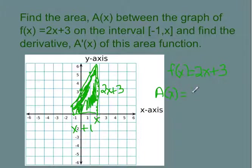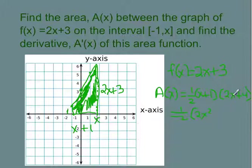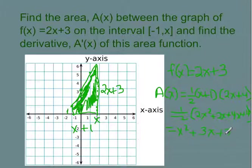So I have one half times the height, which is x plus 1, times the sum of the two bases. The left base at x equals negative 1 is 1, and the right base is 2x plus 3, so the sum is 2x plus 4. Distributing out: x times 2x gives 2x squared, and the middle terms give 6x, and 1 times 4 gives 4. Multiplying everything through by one half: one half of 2x squared gives x squared, one half of 6x gives 3x, and one half of 4 gives 2. So my area function is x squared plus 3x plus 2.